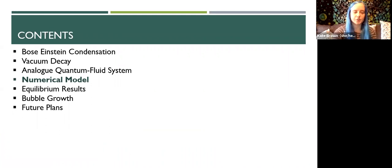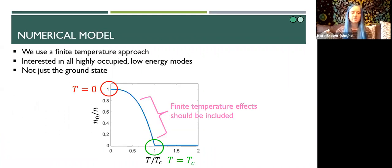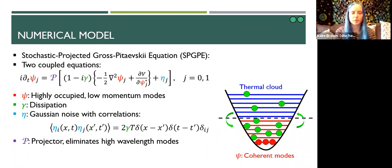So now we need to choose a numerical model. Since the process we're modeling is relying on fluctuations to kick a system from a metastable state into a stable state, we have to work in this region here where we have to consider multiple modes and not just the ground state. We're interested in all of the low energy macroscopically occupied modes in our system and we really need to take into account thermal effects.